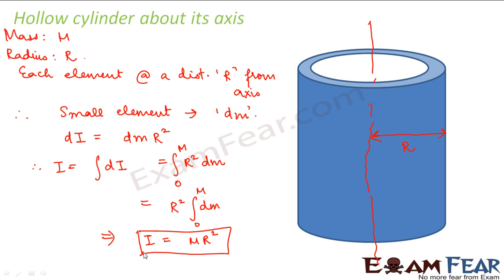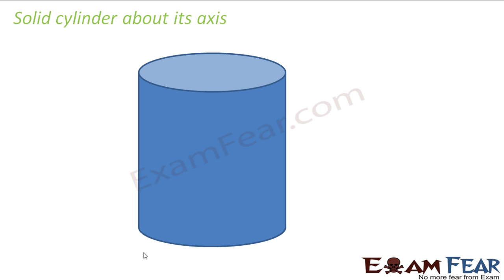Now how will it vary if the cylinder is no more hollow? Let us suppose the cylinder is a solid cylinder. In that case the scenario becomes a little more complicated, because in case of a hollow cylinder we could easily assume that each element is at a distance r from the axis. But in case of a solid cylinder you have elements even inside the cylinder.